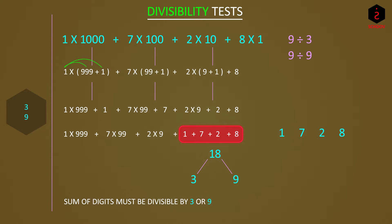You can check and verify that 1728 divided by 3 is 576 and 1728 divided by 9 is 192. So for the number to be divisible by 3 or 9, sum of its digits must be divisible by 3 or 9.